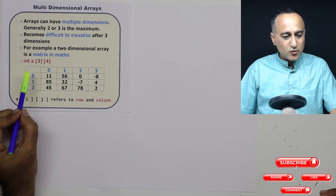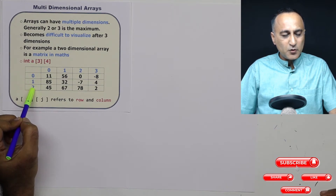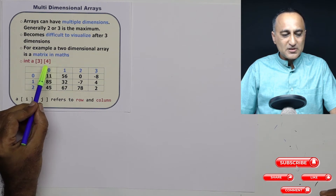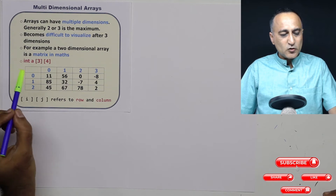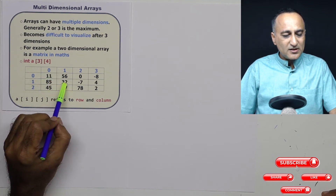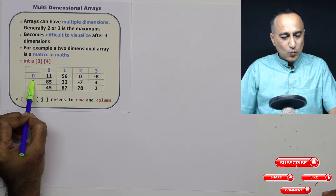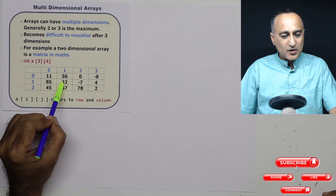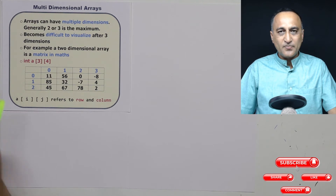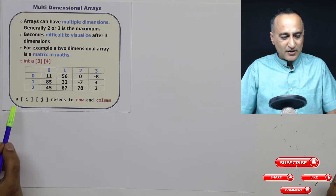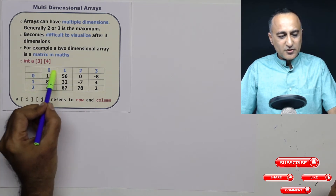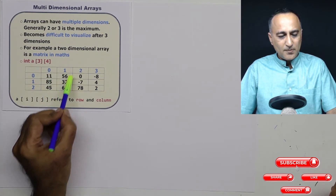We start both the rows and columns from zero, not from one. That's why, although I say three rows, we start from zero — so I have zero, one, and two. Although I say four columns, since we start from zero, it is zero, one, two, and three. So if I have to refer to element 32, it is a[1][1]. Instead of using constant numbers, I will generally use variables i and j to refer to the row and column respectively — i refers to the row, j refers to the column.